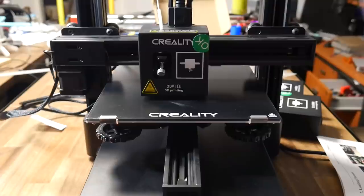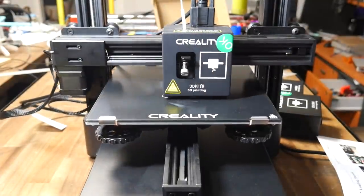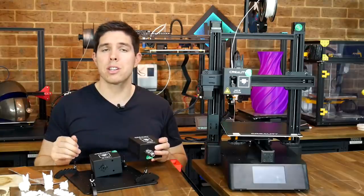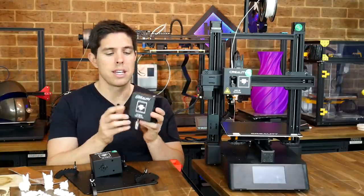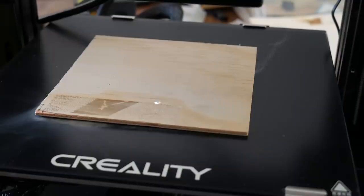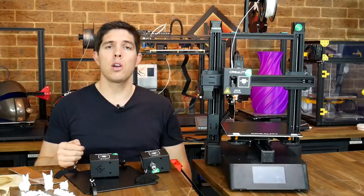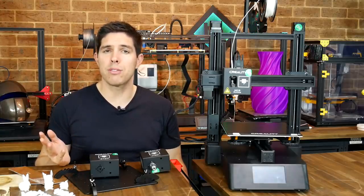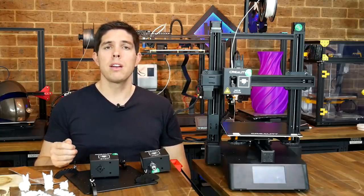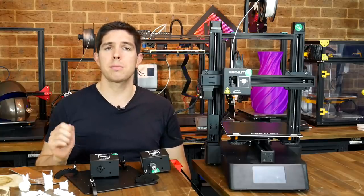Creality recently asked me if I wanted to do some beta testing on this. This is the CP-01, currently configured as a direct drive 3D printer, but in a couple of minutes you can switch between the plug and play heads to make it a CNC engraver or a laser diode engraver as well. The reason for me having this is to give Creality some feedback on the early version. They didn't even ask me to do a video, but I thought I'd like to make one because as a machine for a hobbyist, it ticks most of the boxes.